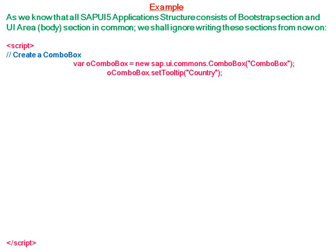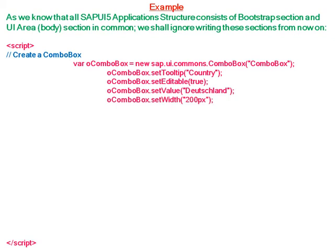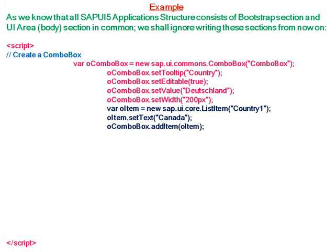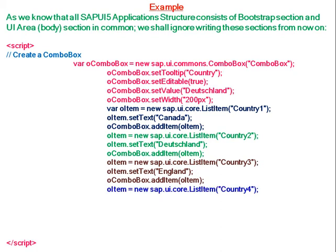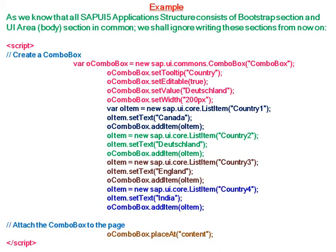For this combo box, the tooltip is 'Country', editable is set to true, and the default value set in the combo box is 'Deutschland' — so when we see the result in the browser, we can see the value Deutschland in the combo box. The width is 200px. The items in the combo box are: Country 1 as Canada, Country 2 as Deutschland (which is already set as the default value), Country 3 as England, and Country 4 as India. We then attach this combo box to the UI area using the ID 'content'.